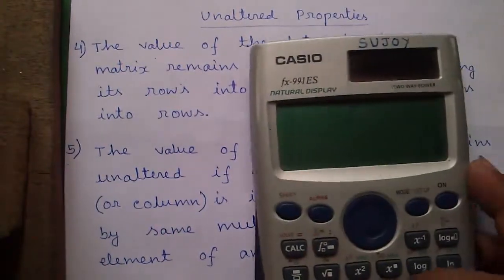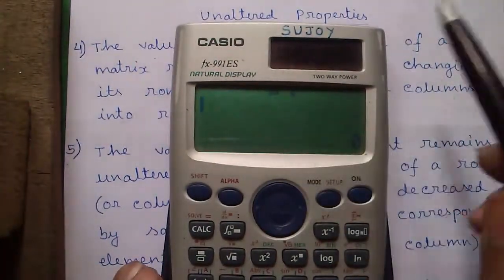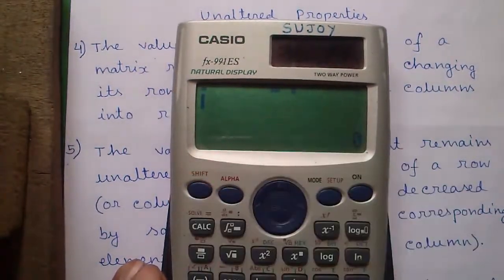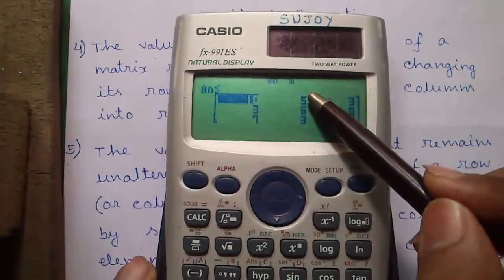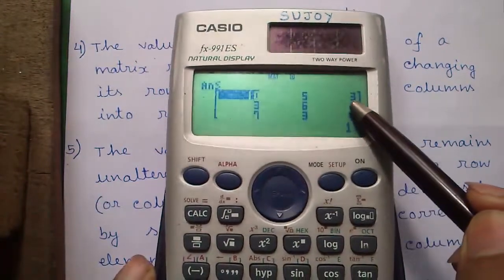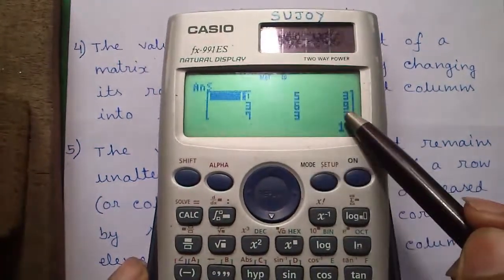We can easily transpose a matrix on this calculator. So first let me show you matrix A which is 10, 5, 3, 3, 6, 9 and 7, 3, 2.